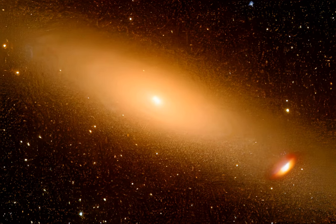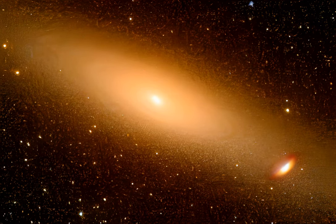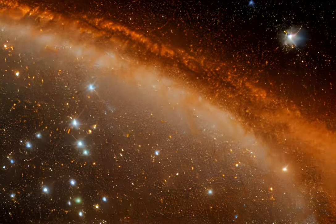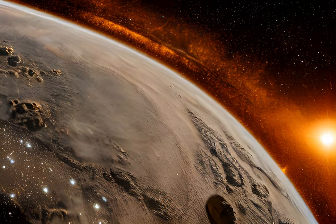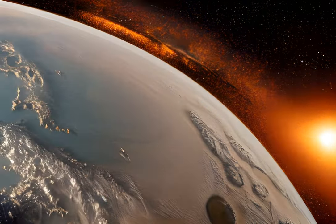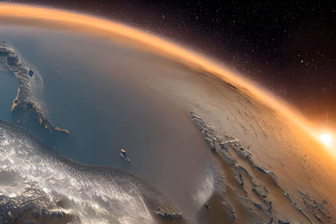In conclusion, the discovery of two planets similar to Neptune and Jupiter circling around a Sun-like star is an exciting development in the search for extraterrestrial life. With each new discovery, we come closer to understanding the vastness and complexity of the universe we live in.